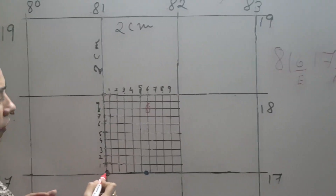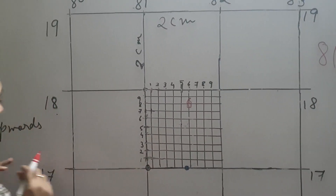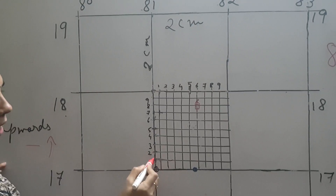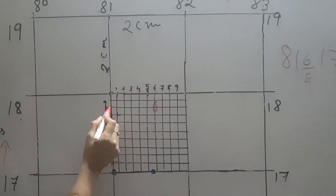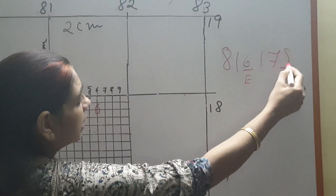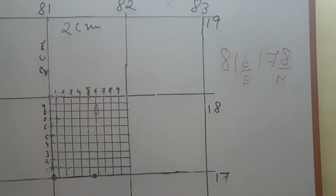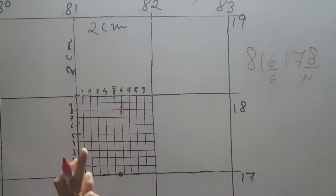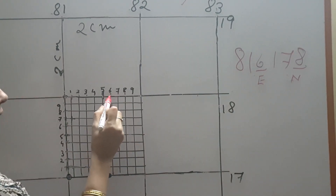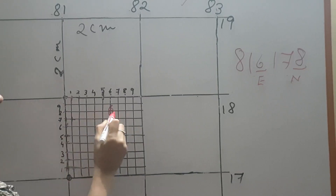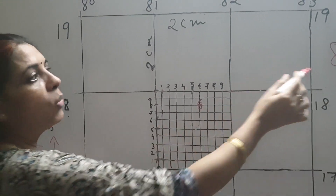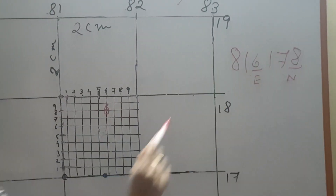And when we go upward — the upward reading — counting up: 1, 2, 3, 4, 5, 6, 7, 8. It is on 8, so you will write the 6th digit as 8. Here you will not give a second answer; you will only give one answer because it is exactly on the division that you have drawn. So here you will have only one answer.